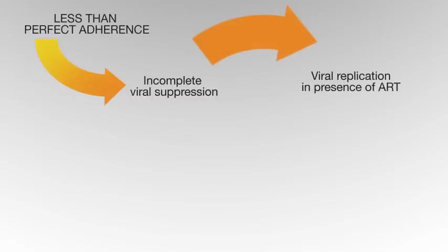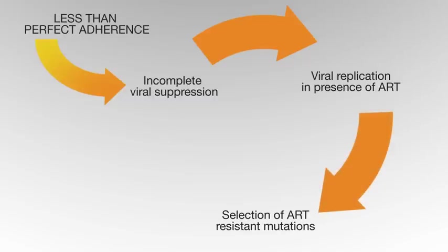It basically then becomes a cycle. If you have less than perfect adherence, you get incomplete viral suppression, you get replication of virus in the presence of antiretroviral therapy, you get selection out of those resistant mutations, which then means the drugs no longer work, and the whole process carries on.